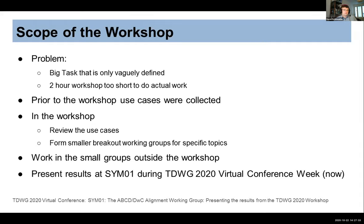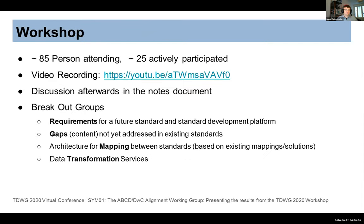During the workshop, we reviewed those use cases and formed smaller breakout groups for various specific topics. We had prepared some topics and also asked whether there were others we should cover. The goal was to split into working groups, do the actual work outside the workshop, and have a first iteration of results done by today — for this symposium. The workshop itself was quite well attended: 85 people were there, with 25 actively participating.